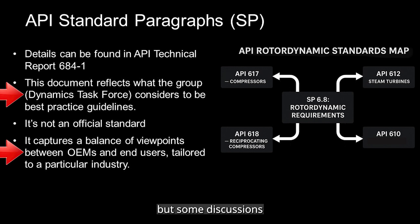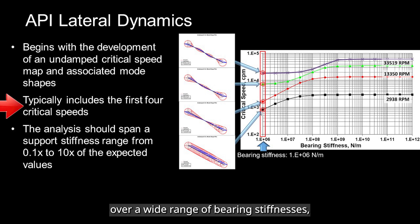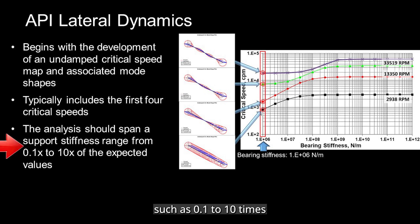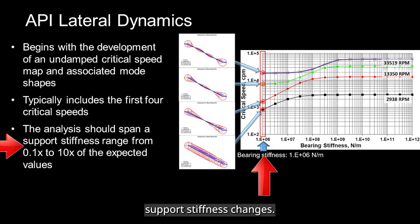But some discussions tend to focus heavily on issues relevant to centrifugal compressors. The API spec requires undamped critical speed maps and mode shapes, usually the first four modes across a wide stiffness range. These are to be analyzed over a wide range of bearing stiffnesses, typically from low to high, such as 0.1 to 10 times nominal stiffness, to show how rotor dynamics are sensitive to bearing support stiffness changes.